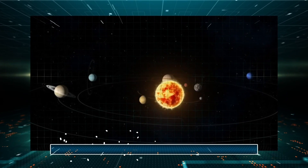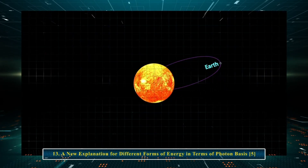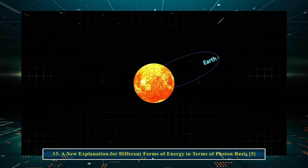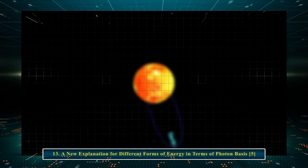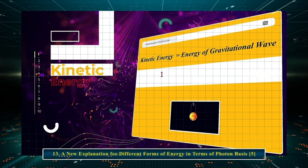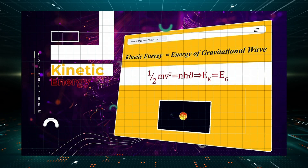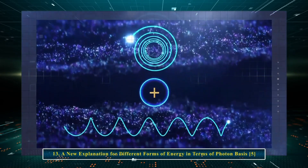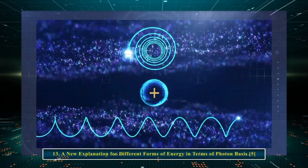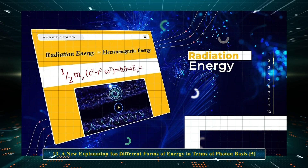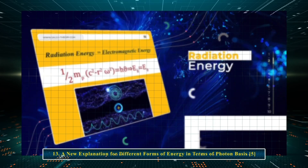Chapter 13: A new explanation for different forms of energy in terms of photon bases. If we consider our solar system and look at the relation between the Sun and the Earth, we see that the Earth always revolves around the Sun in a closed circular path. Due to this stable structure, kinetic energy equals the energy of the gravitational wave or gravitational flux energy. Given that visible light is the same as radiant energy, we can write that radiant energy equals electromagnetic energy.